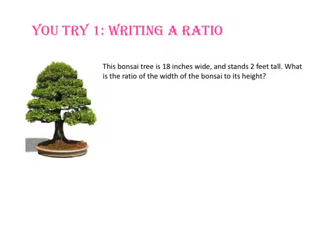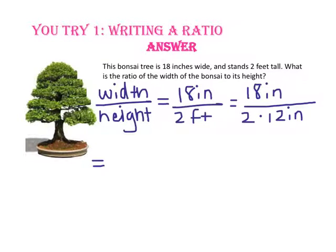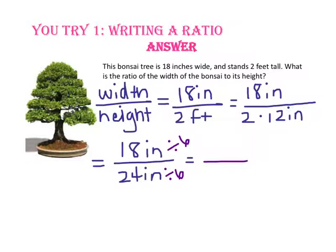Pause the video and do you try number 1. The bonsai is 18 inches wide and stands 2 feet tall. What is the ratio of the width of the bonsai to its height? Since the bonsai is 18 inches wide and 2 feet tall, we will start with the ratio 18 inches to 2 feet. We now need to convert 2 feet into inches. Since there are 12 inches in a foot, there are 24 inches in 2 feet. Now let's simplify by dividing the numerator and denominator by 6. The ratio of the width of the bonsai to the height of the bonsai is 3 to 4.